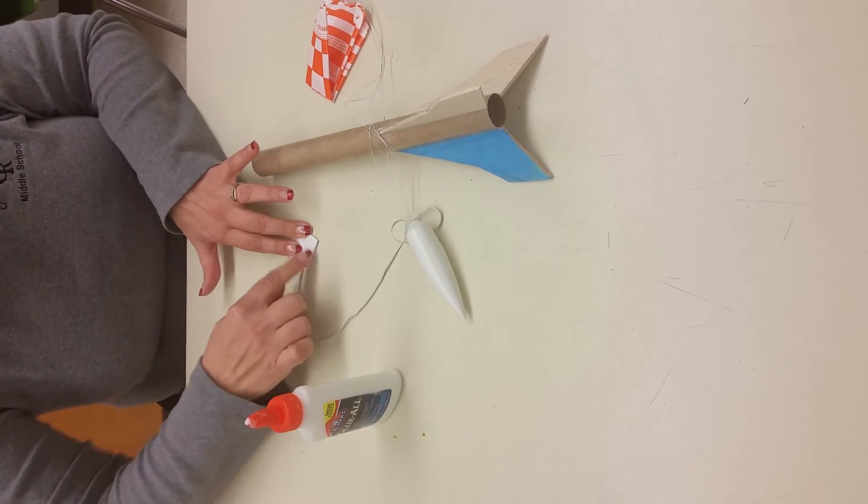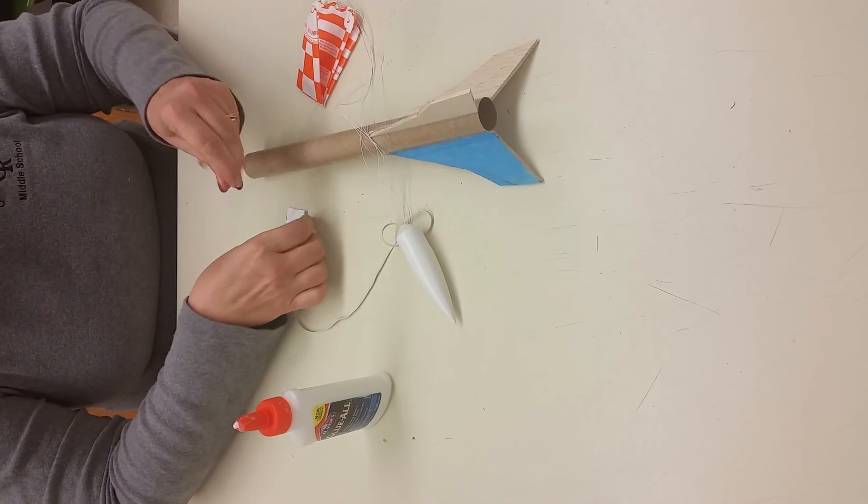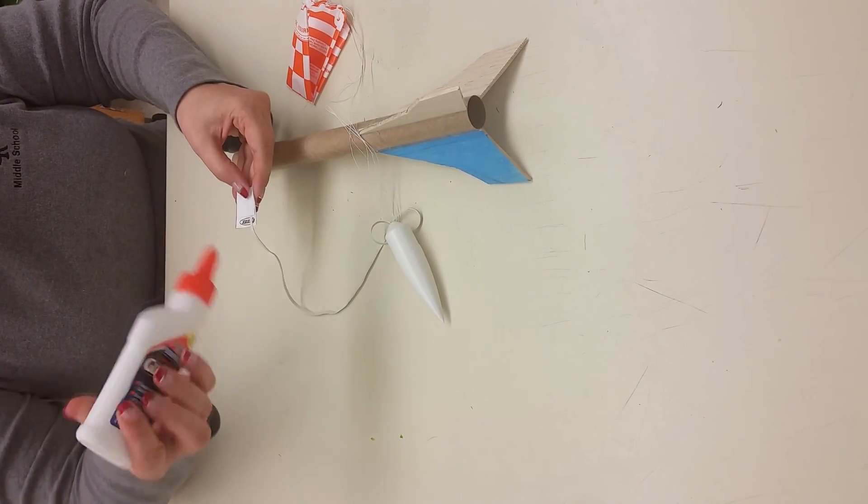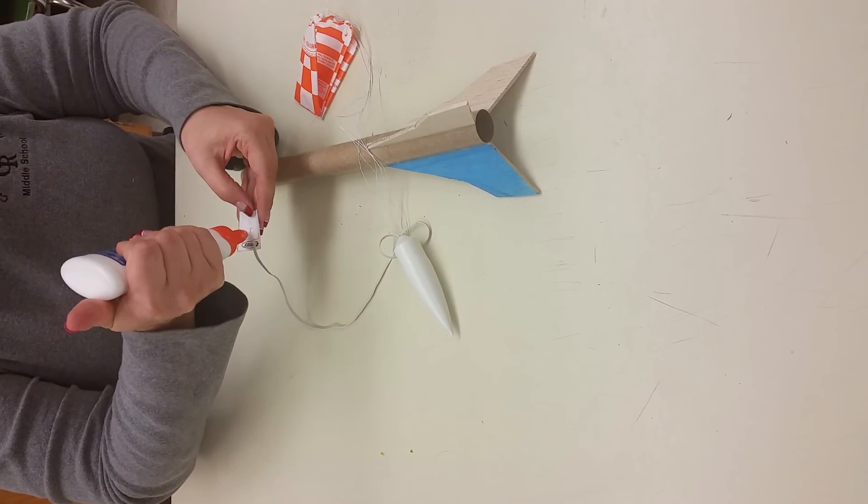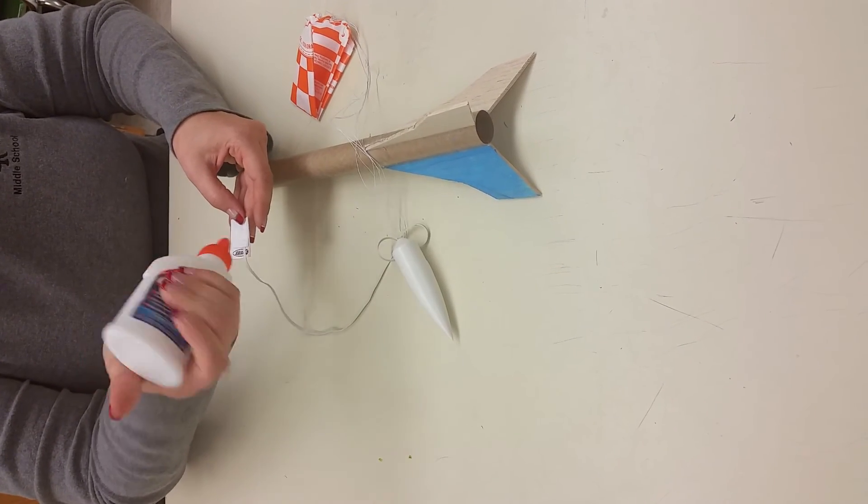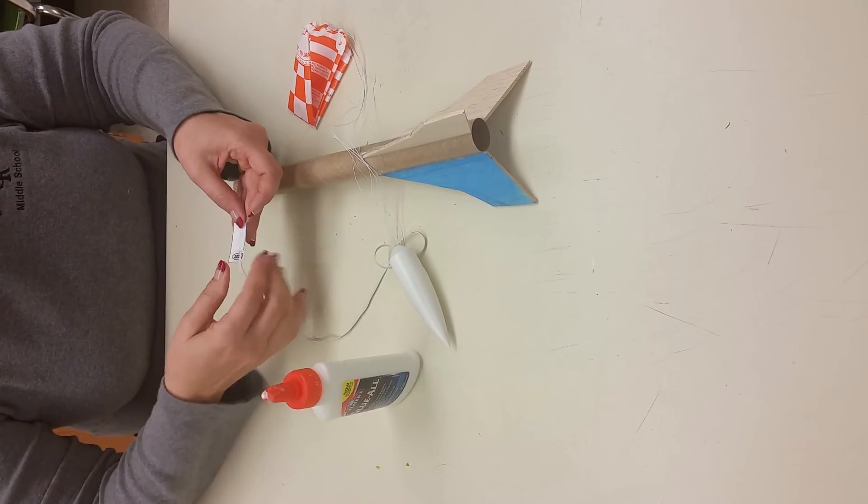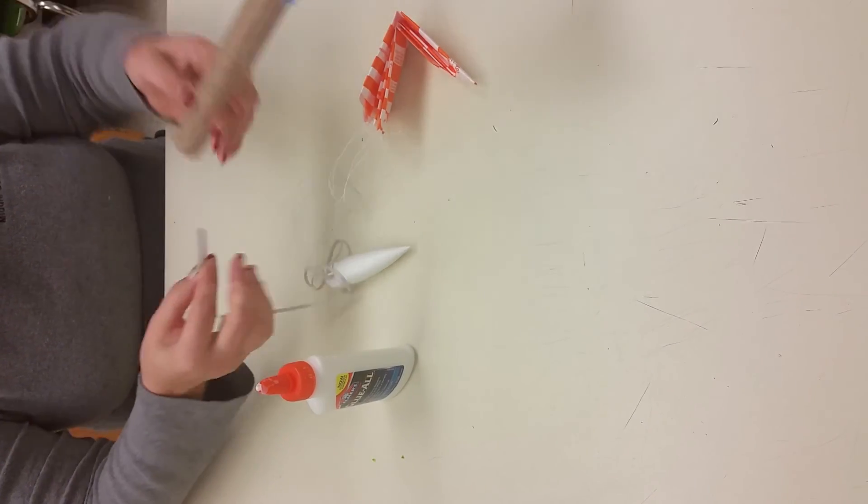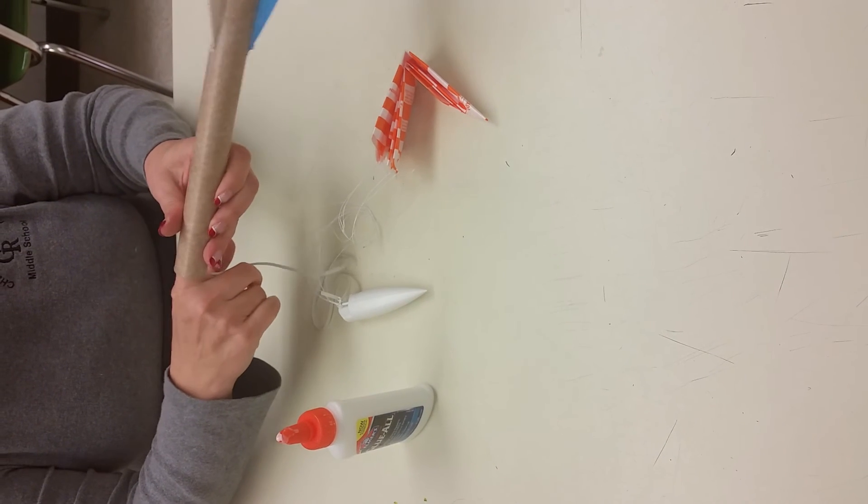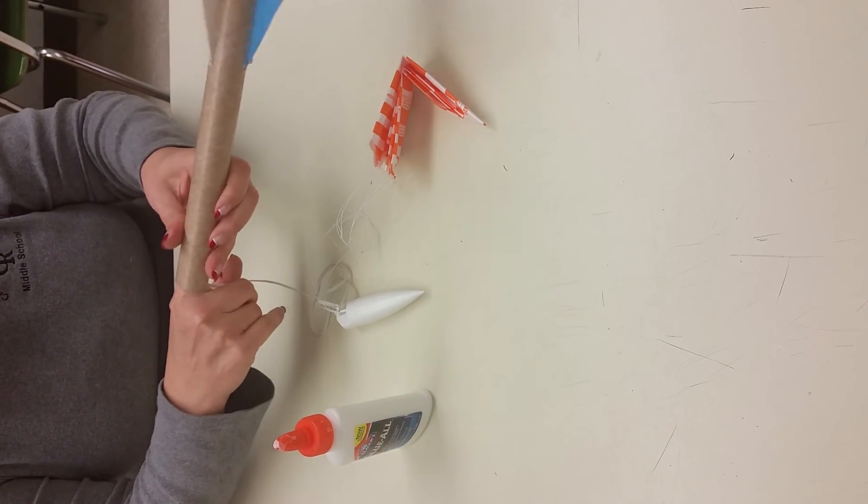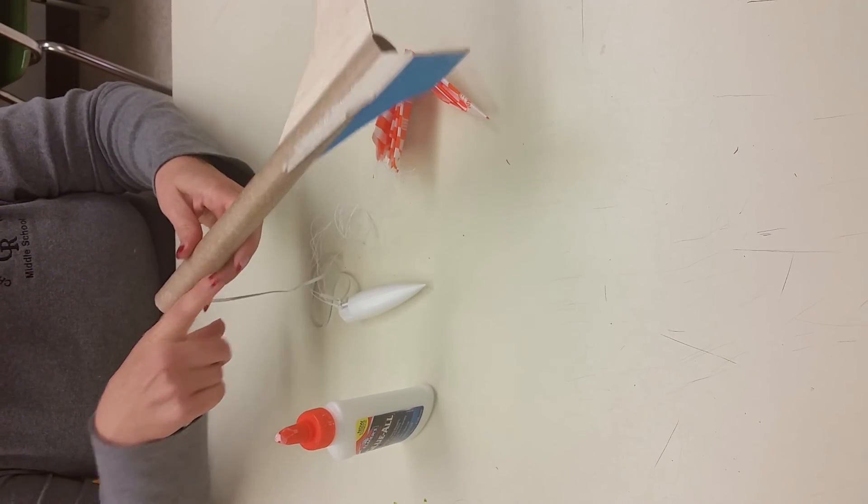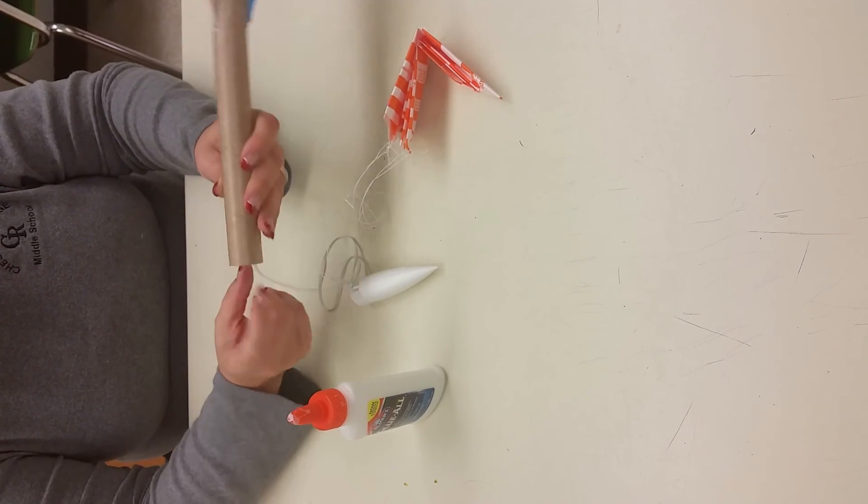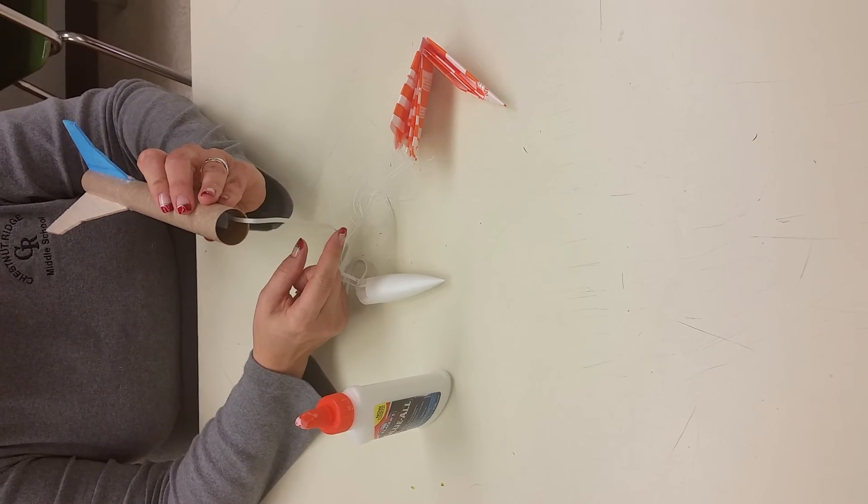Now we are going to take this side up and put a little bit bigger blob of glue on that one. You are going to take your body tube. You're going to put this into your body tube and stick it to the wall of your body tube about fingertips length inside. Make sure you're pressing it down so that it's nice and secure on the inside of your body tube.